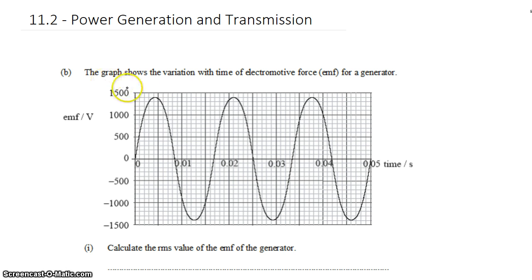We're looking at power generation in AC circuits. We have a graph which shows the variation with time of the electromotive force that a generator generates. And we see the EMF rise and fall in time, so this is an AC generator.